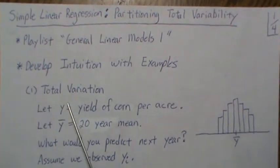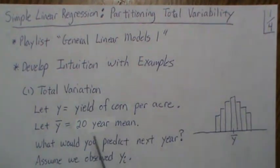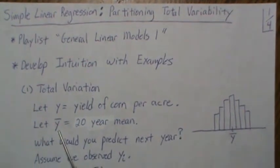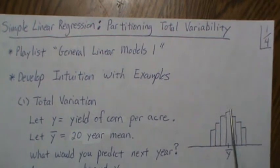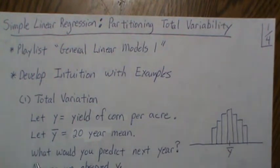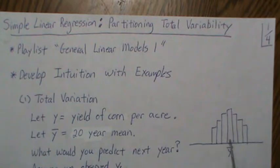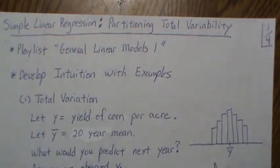The first example: let Y be the yield of corn per acre and the 20-year mean we'll call Y-bar. The distribution looks approximately normal with the mean in the middle. The question is: what would you predict next year? Well, the mean — that's all the data we have, and on average you're going to be correct year to year.